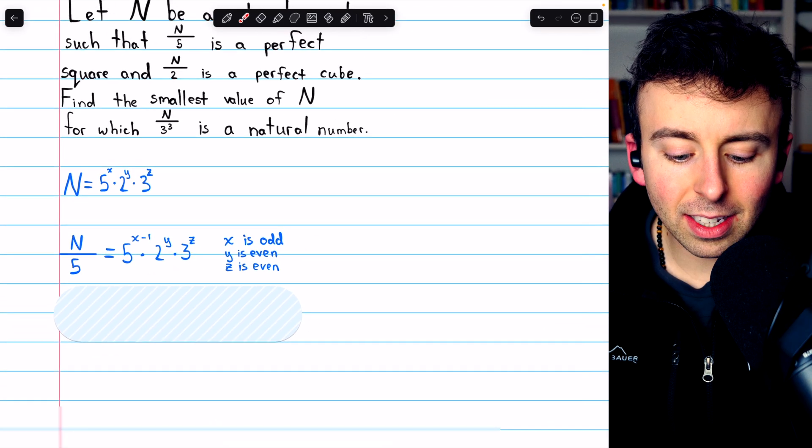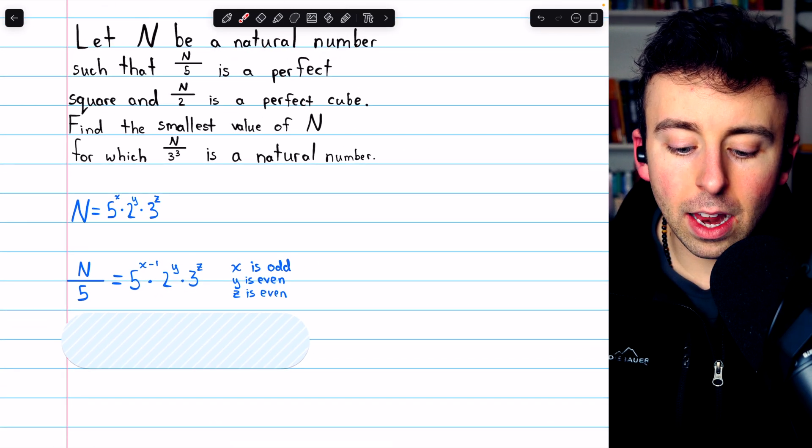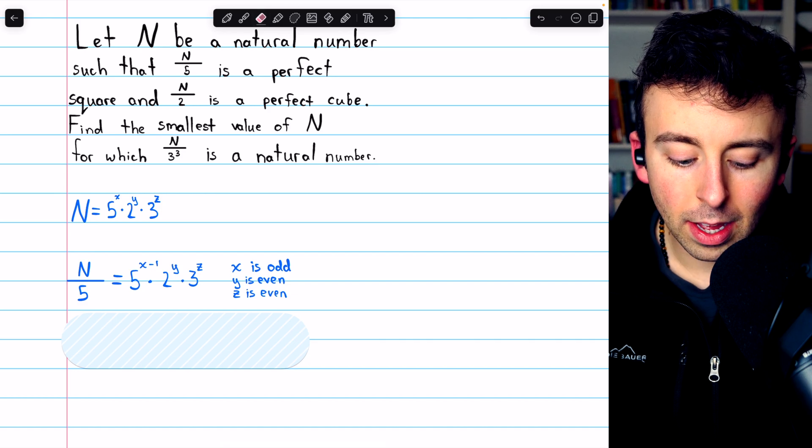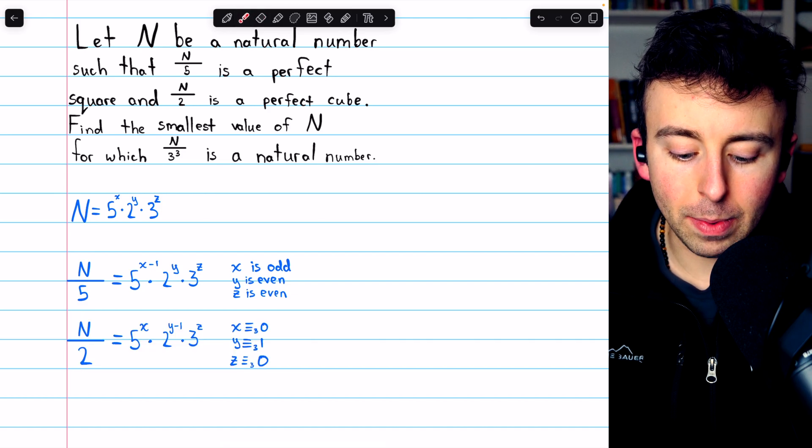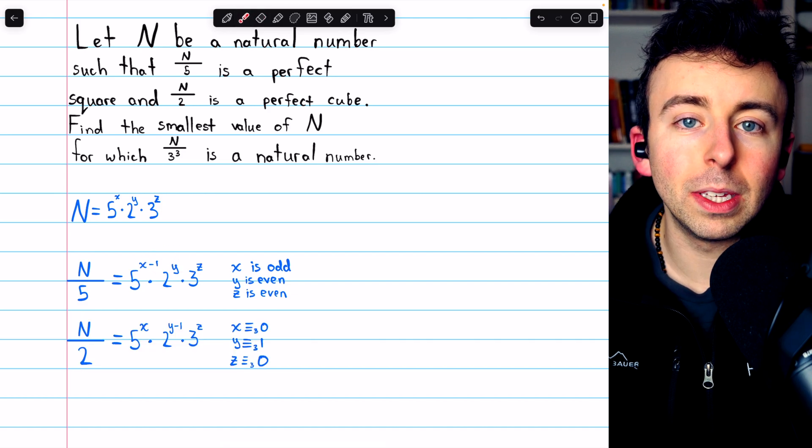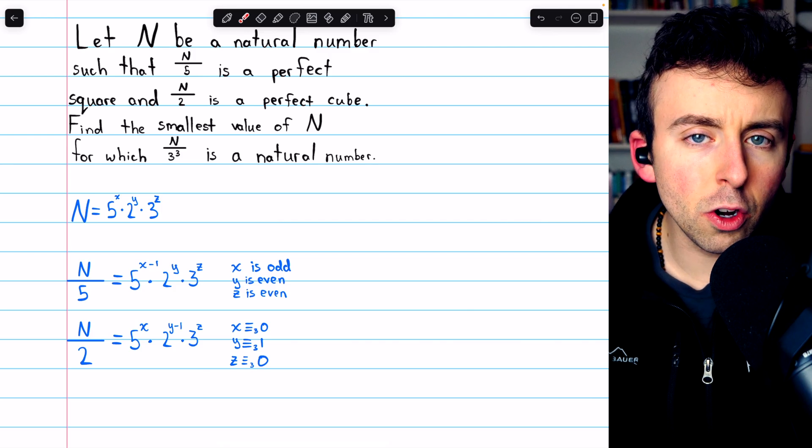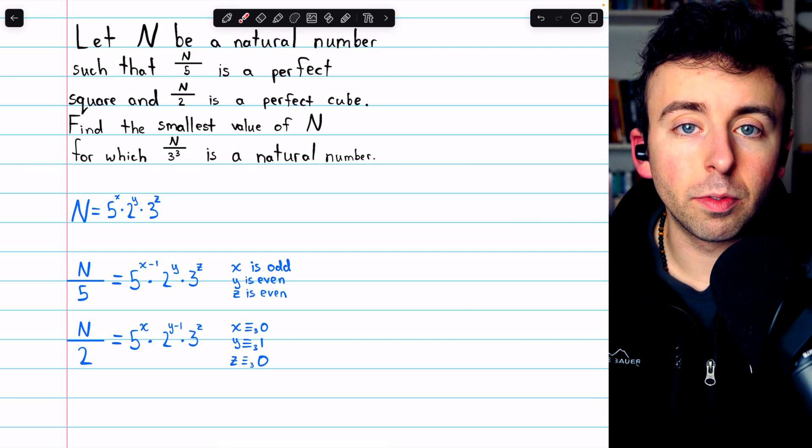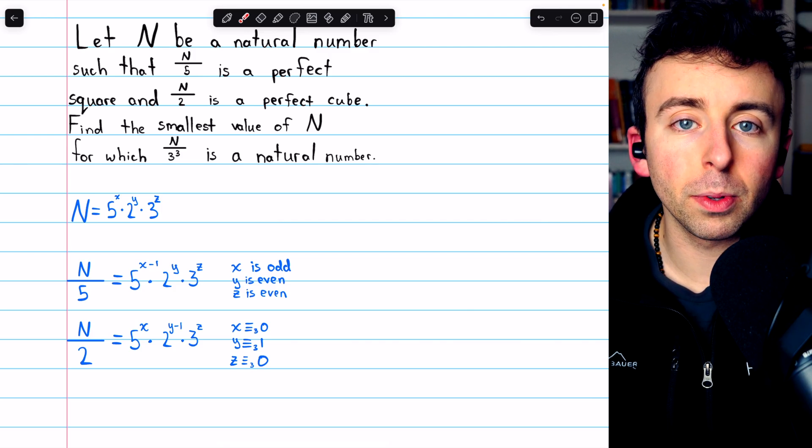Now, similarly, let's consider the second condition. N over 2 has to be a perfect cube. Just like being a perfect square means that the powers must all be even, being a perfect cube means that the powers of the factors must be multiples of 3.